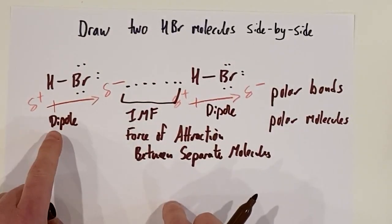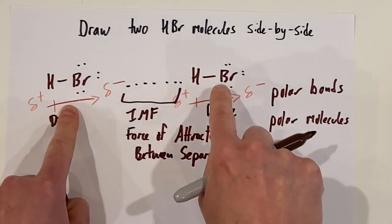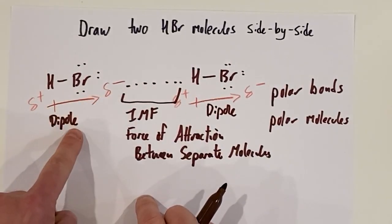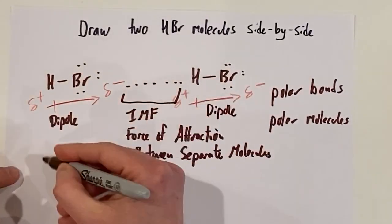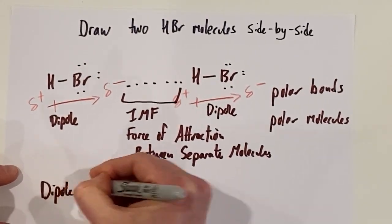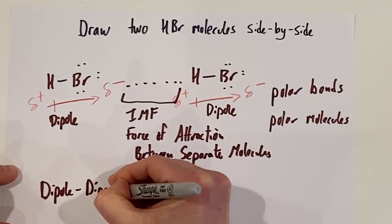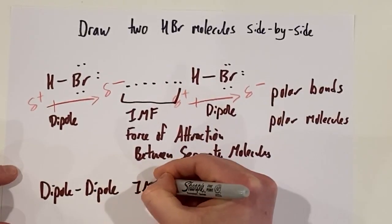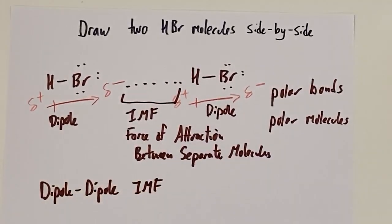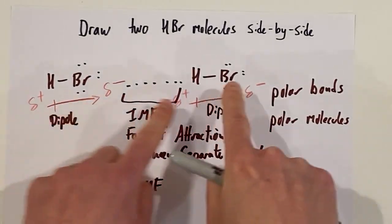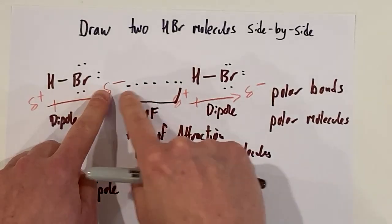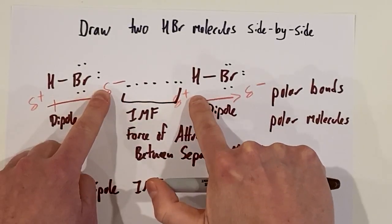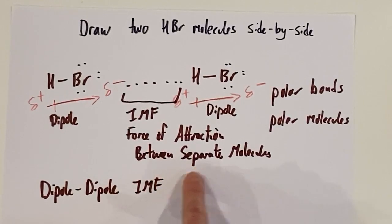What we have here is an attraction between this dipole and this dipole. Specifically, the partial negative on one dipole and the partial positive on another dipole. They attract. The name of this IMF is a dipole-dipole IMF. How does it come about? It's because we've got two polar molecules here and the partial negative on one molecule attracts to the partial positive on the separate molecule. Force of attraction between separate molecules, dipole-dipole IMF.